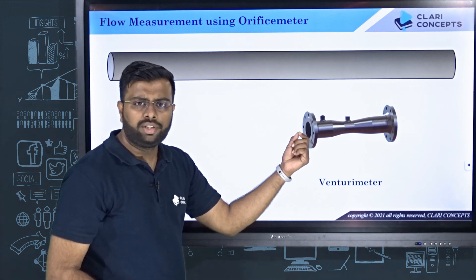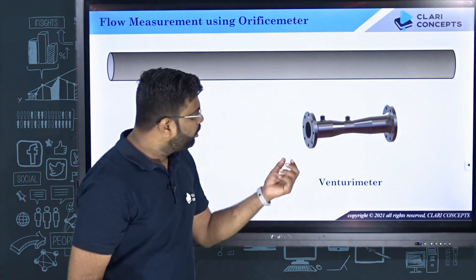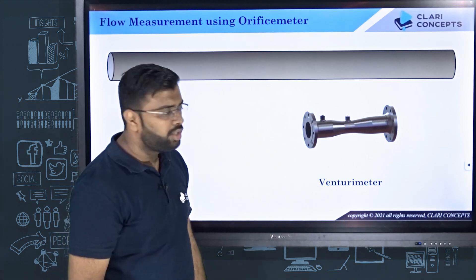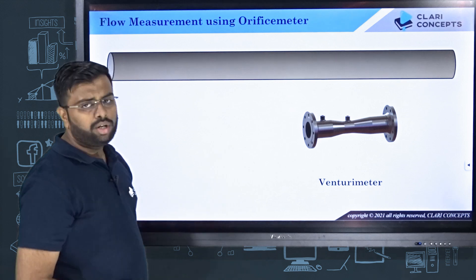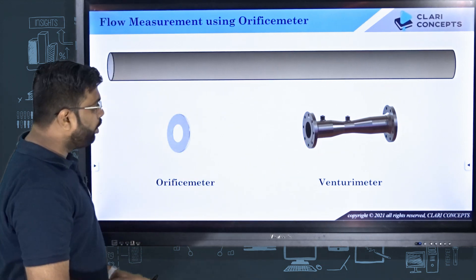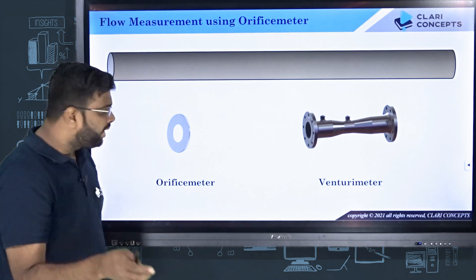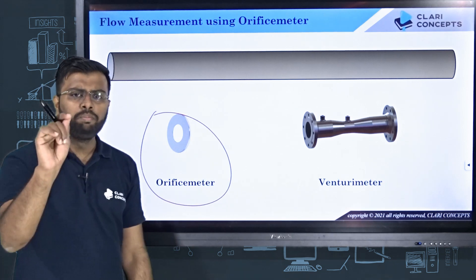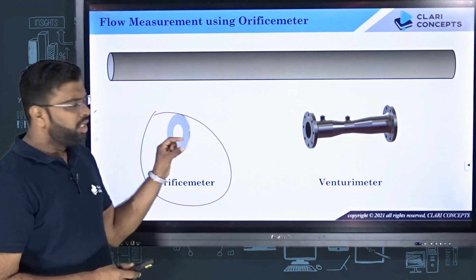This is a very smooth transition in the cross-sectional area. This is a relatively costlier device. But if you want to measure the flow rate using a cheaper device, you have a device called orifice meter. What is orifice meter? Simply a circular disc with a center hole.